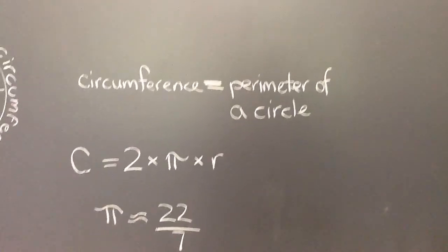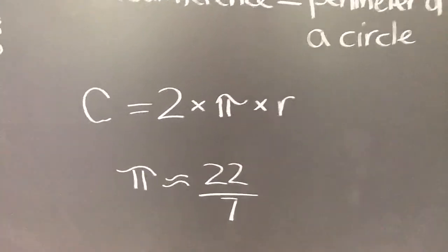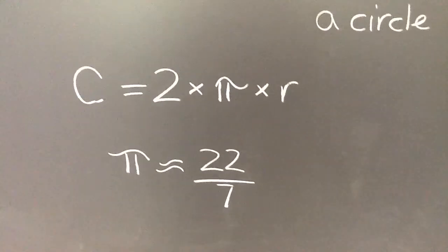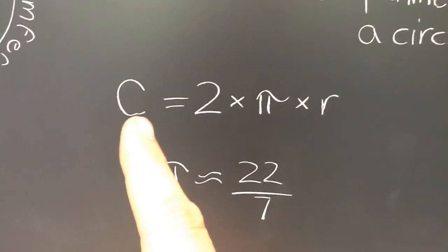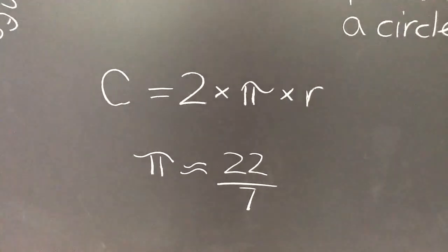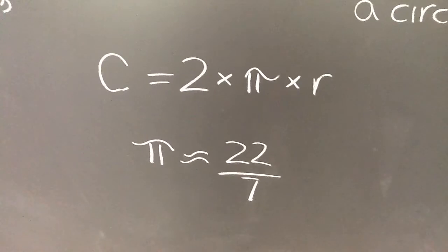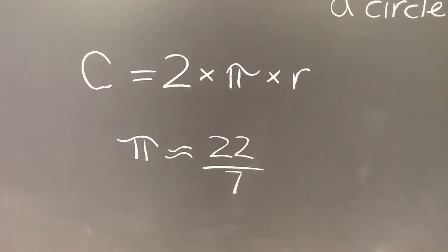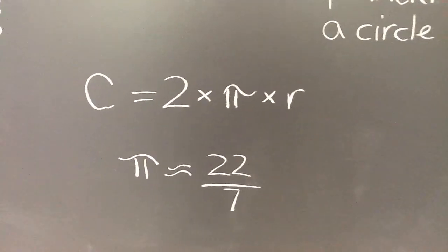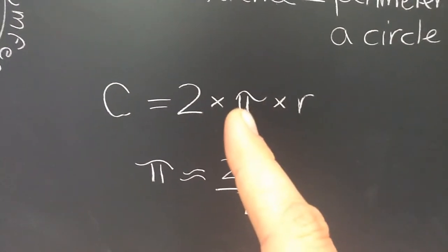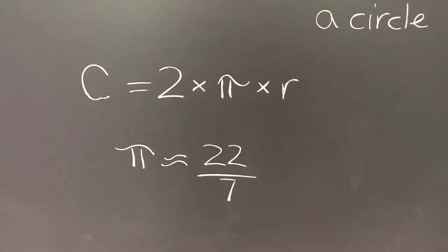There's a nice handy-dandy formula for the circumference. We'll use capital C to represent that circumference. It turns out that the circumference of every circle, every two-dimensional standard circle in the universe, is 2 times the number pi times the radius of the circle.